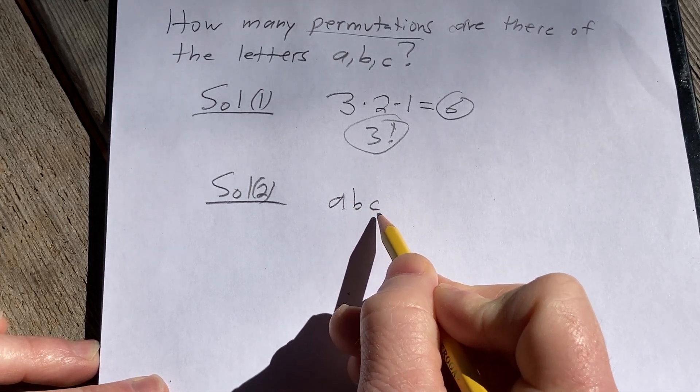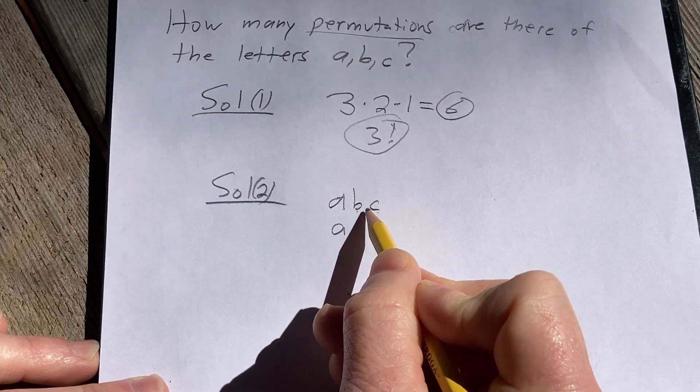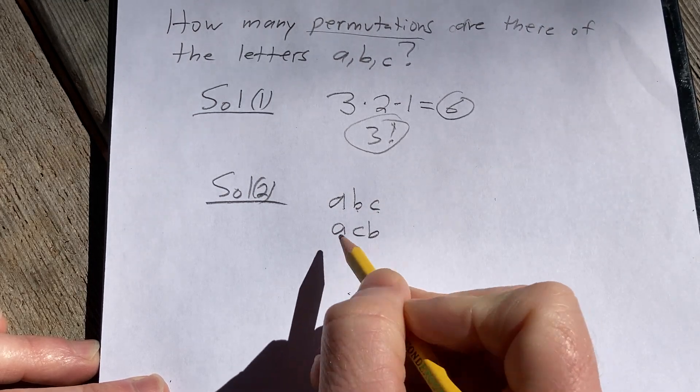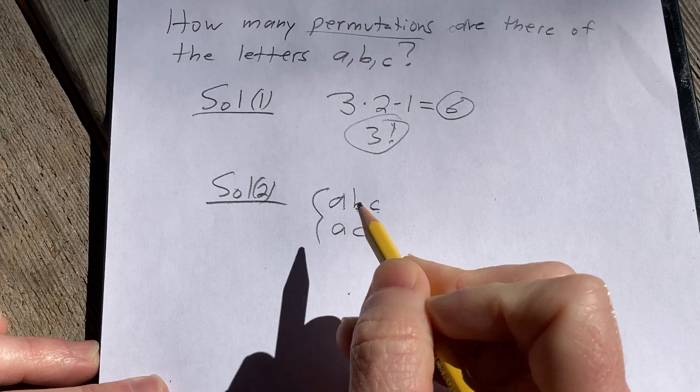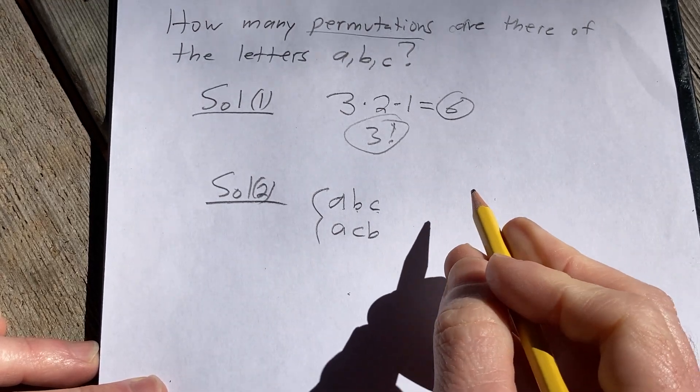So, the only other permutation that starts with the letter A would be A, and then you just rearrange these. So, these are all the permutations that start with the letter A. Now, let's look at all the permutations that start with the letter B.